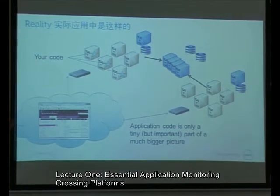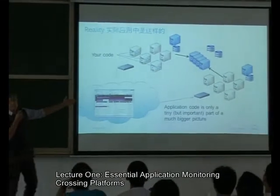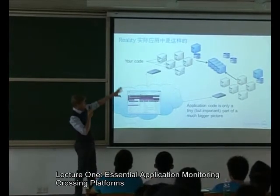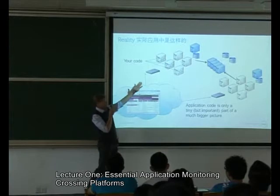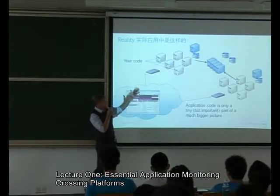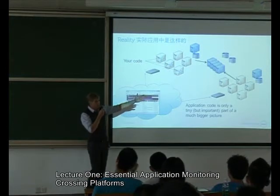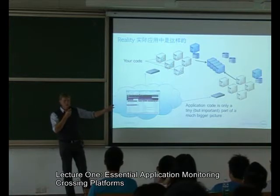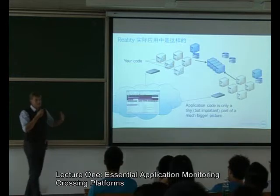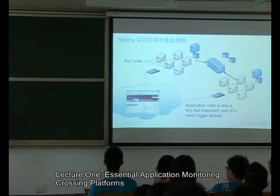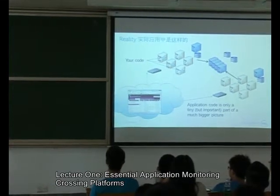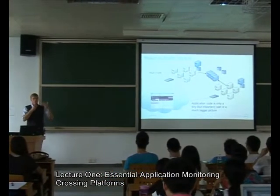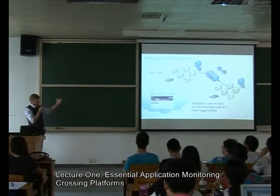In reality, your code does not run on a single box. When you use it in the real world it gets deployed to multiple machines — this is called scalability. Your code may be running on three web servers inside of an application, and that application may have different layers you don't normally deal with. There may be external web services; you will have to talk to another application that you don't write — someone else writes something and you have to ask it questions. Application code that you write is just a tiny part of the picture.